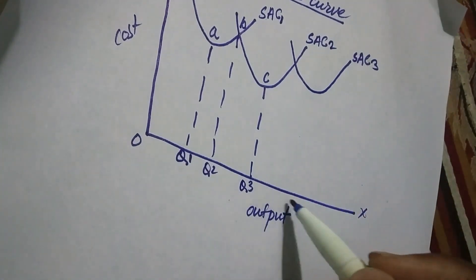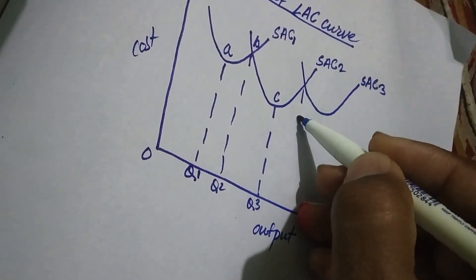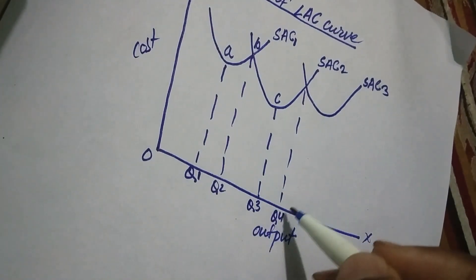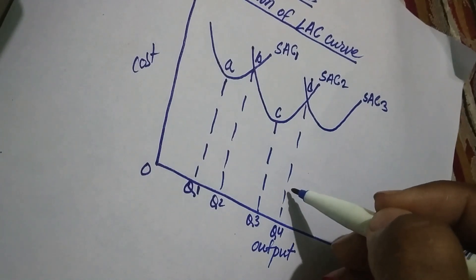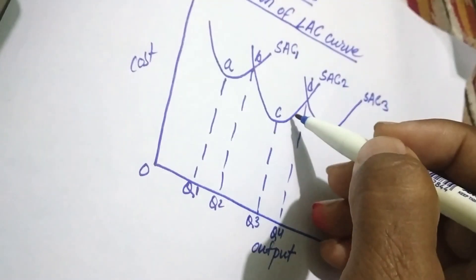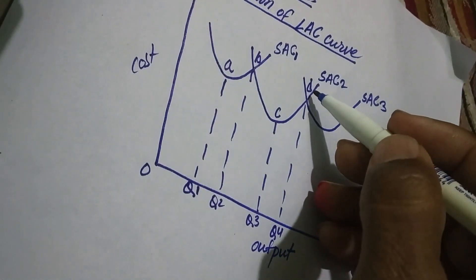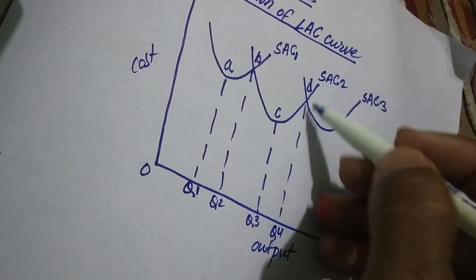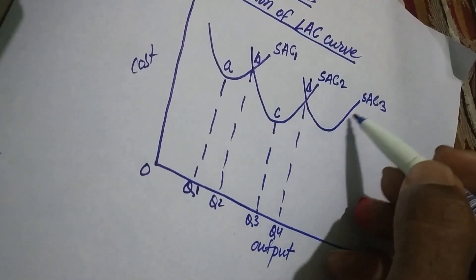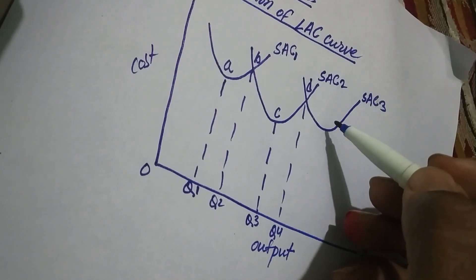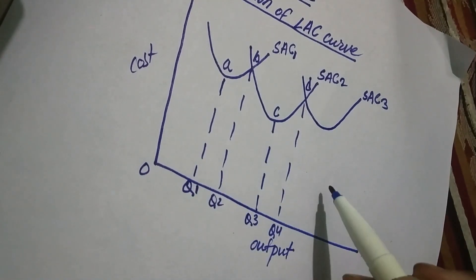Again, suppose there is an increase in the demand for goods and services and the firm decides to produce goods equal to OQ4. This level of output can be produced at DQ4 per unit production cost from the use of the second size of plant. Even if the firm installs the new, bigger size of plant for the production of OQ4, the per unit production cost is also equal to DQ4. So for the production of OQ4, the firm can either use the medium size of plant or install the bigger size of plant.